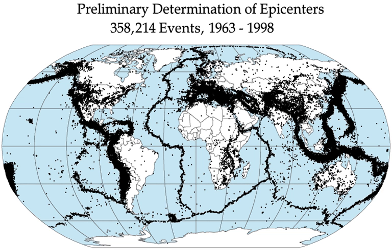The majority of tectonic earthquakes originate at the ring of fire in depths not exceeding tens of kilometers. Earthquakes at a depth of less than 70 km are classified as shallow-focus earthquakes, while those with a focal depth between 70 and 300 km are termed mid-focus or intermediate-depth earthquakes. In subduction zones, where older and colder oceanic crust descends beneath another tectonic plate, deep-focus earthquakes may occur at depths from 300 up to 700 km. These seismically active areas are known as Wadati-Benioff zones. A possible mechanism for deep-focus earthquakes is faulting caused by olivine undergoing a phase transition into a spinel structure.